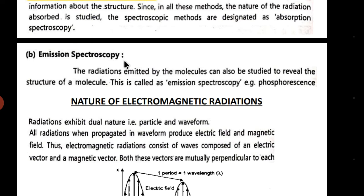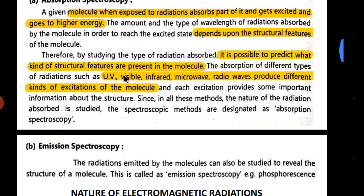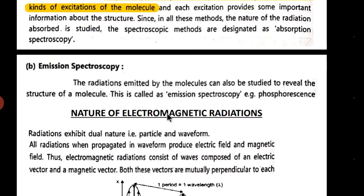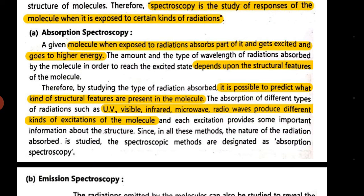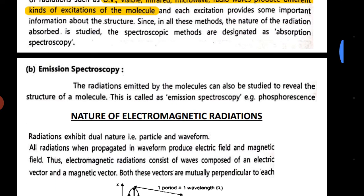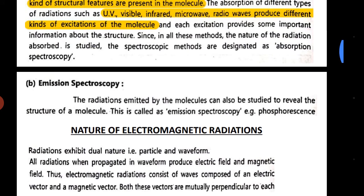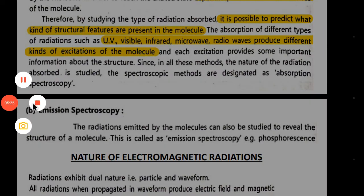As per this topic, emission spectroscopy is not that important, so we will be mostly focusing on absorption spectroscopy. In emission spectroscopy, whenever radiations are emitted by a molecule, it also gives some information. Whenever the molecule goes to the excited state and comes back to the ground state, it emits some radiations, energy, or heat, which can be studied to know what structural features are present in that particular molecule. This is a short introduction to spectroscopy and its two types.